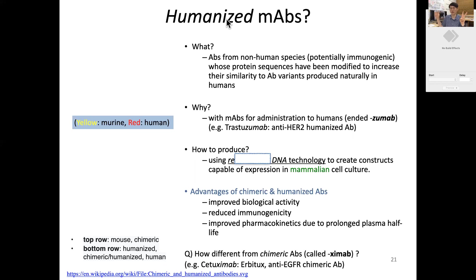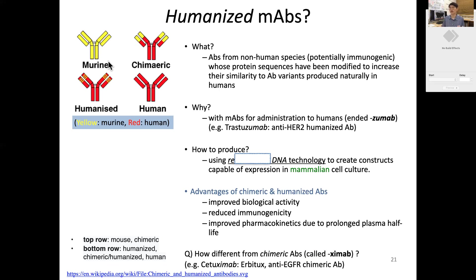The idea is: can we make everything except the variable antigen-binding sites humanized, so that it doesn't cause an immune reaction from our body? A humanized antibody is a monoclonal antibody from a non-human species that is potentially immunogenic to humans, whose protein sequences have been modified to increase similarity to antibody variants produced naturally in humans. The cartoon shows that fully murine antibody used in clinical settings can cause problems.